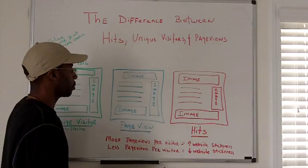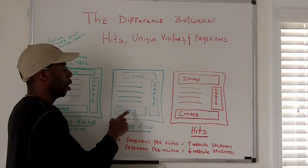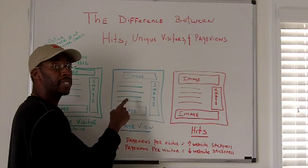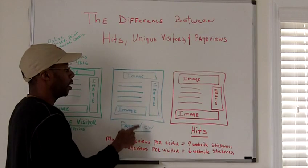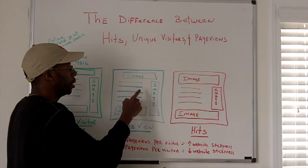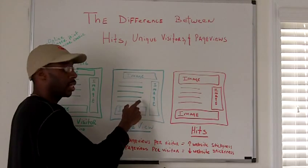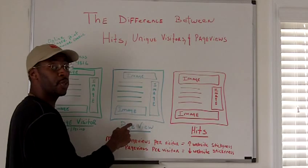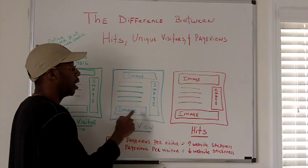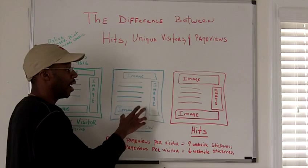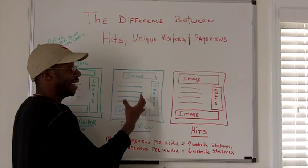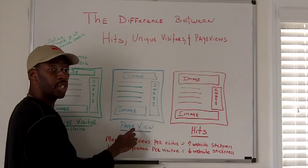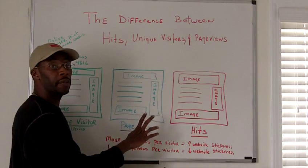Now if you look over here, when someone goes to your website or web page, it's considered a page view. Despite the amount of elements on the page, it's still considered a page view for that visitor. So on a page you can have a lot of hits or images, but it's still considered one page view.